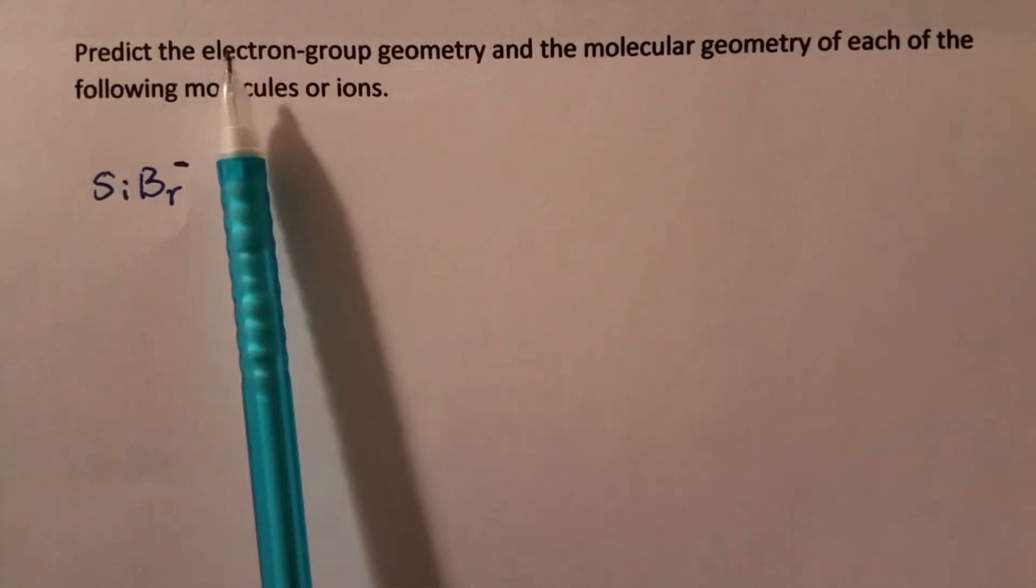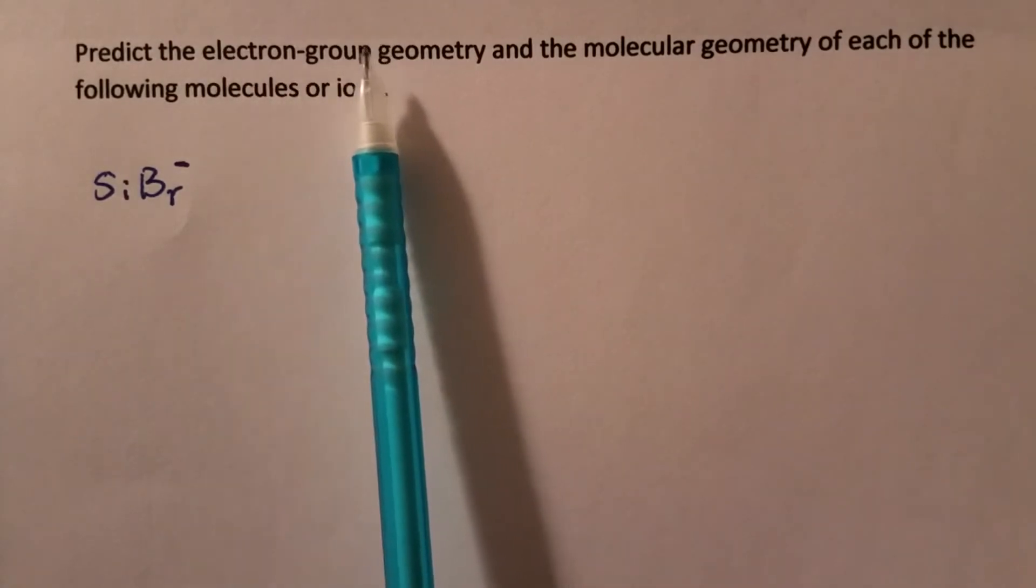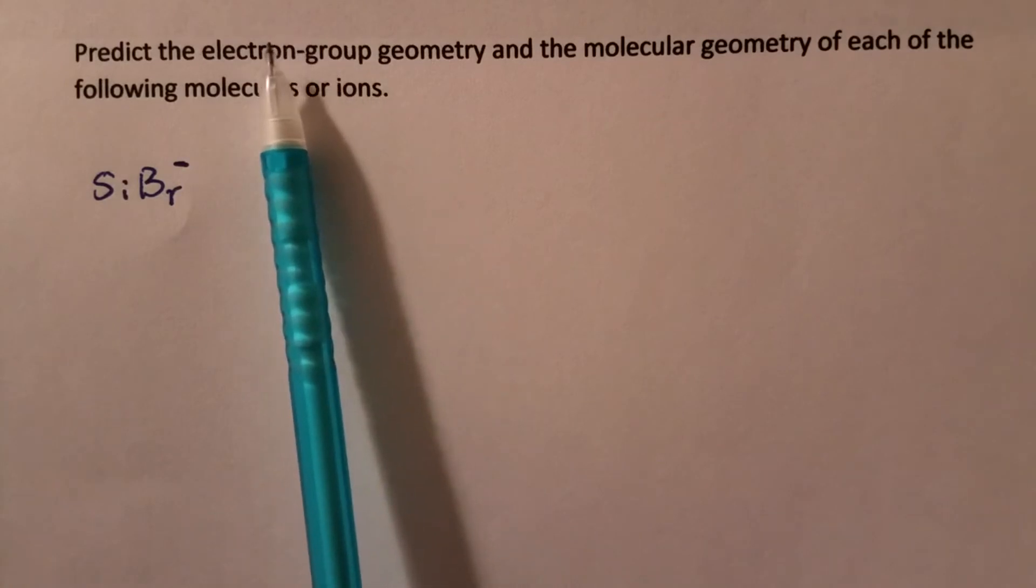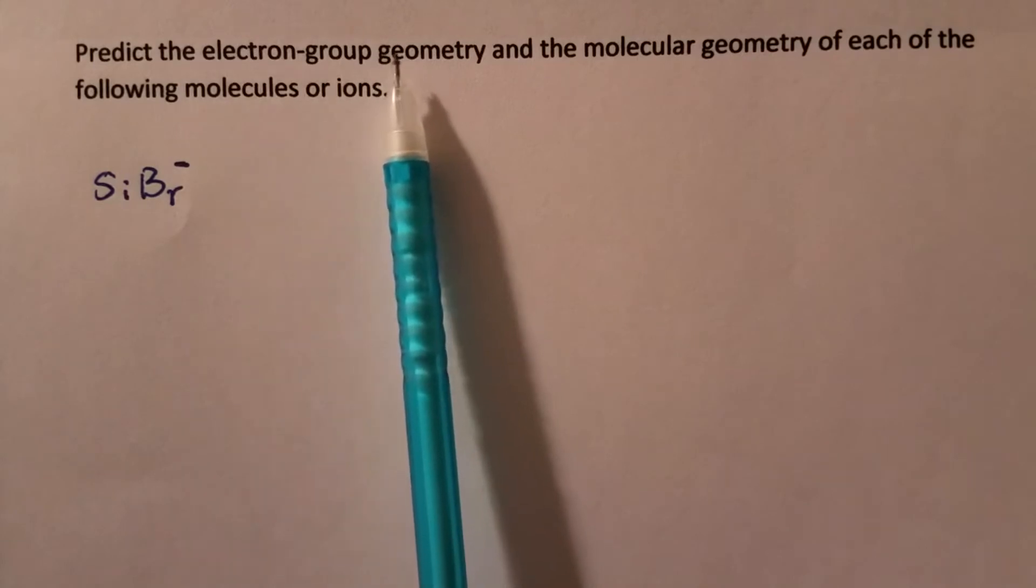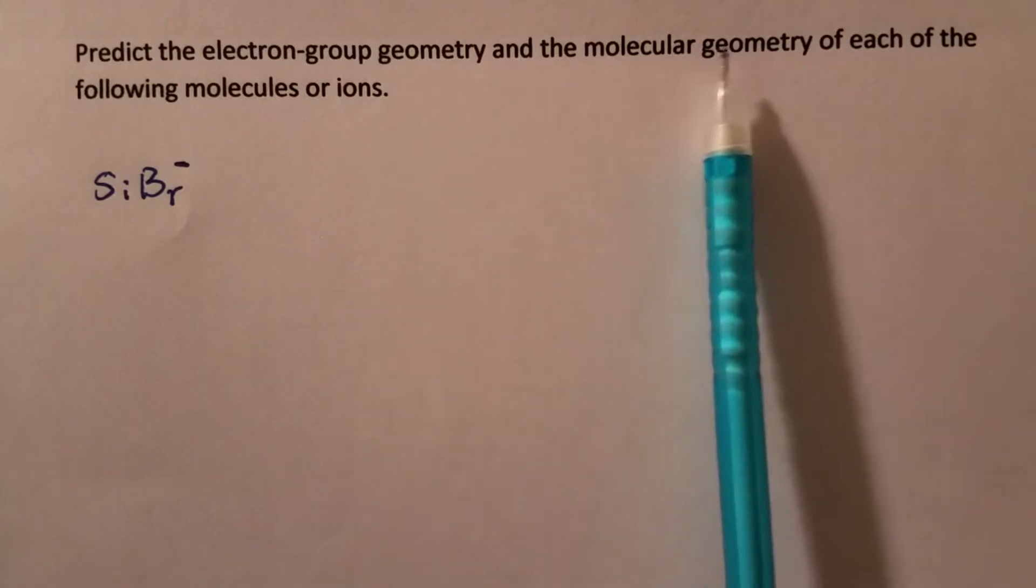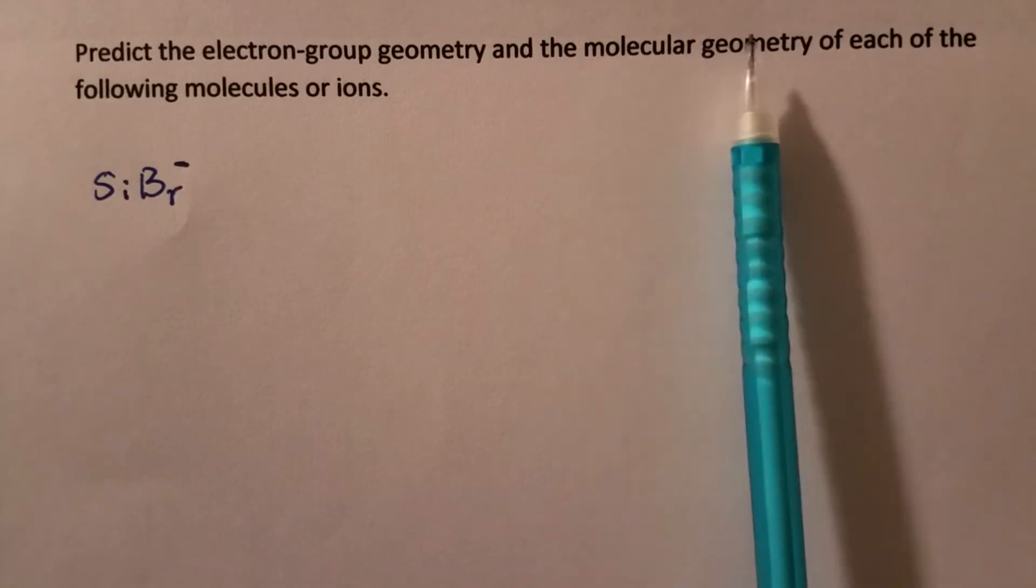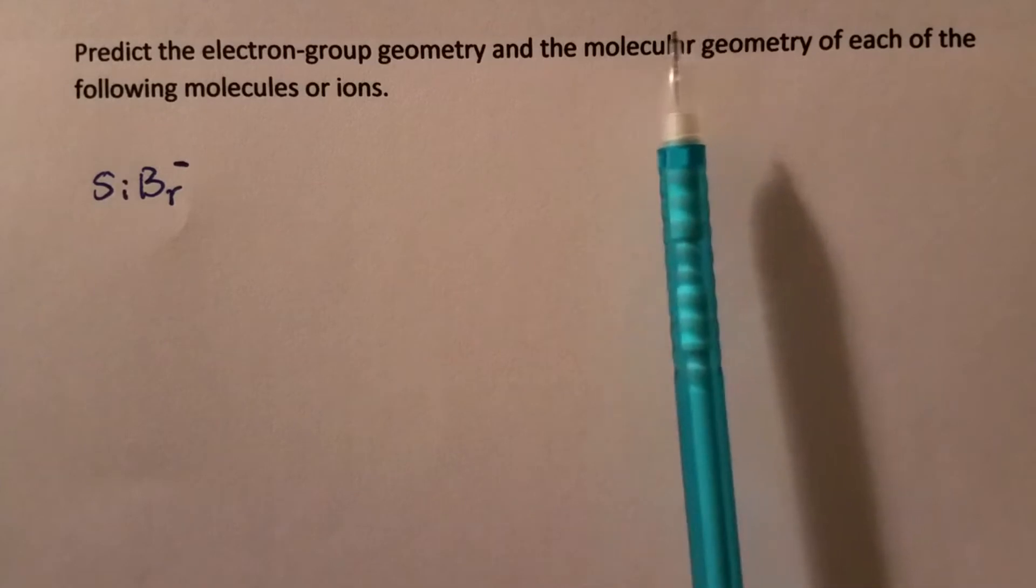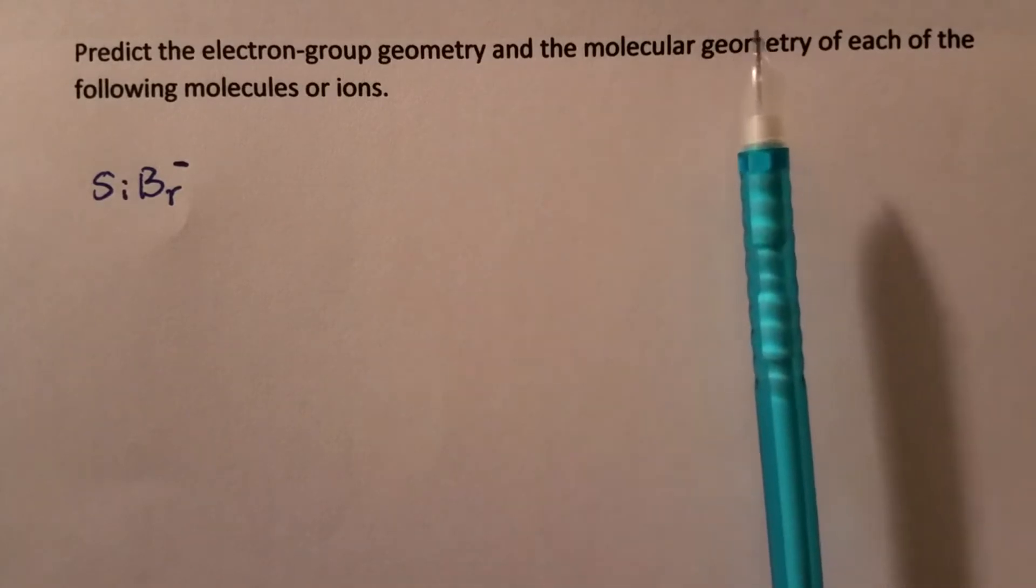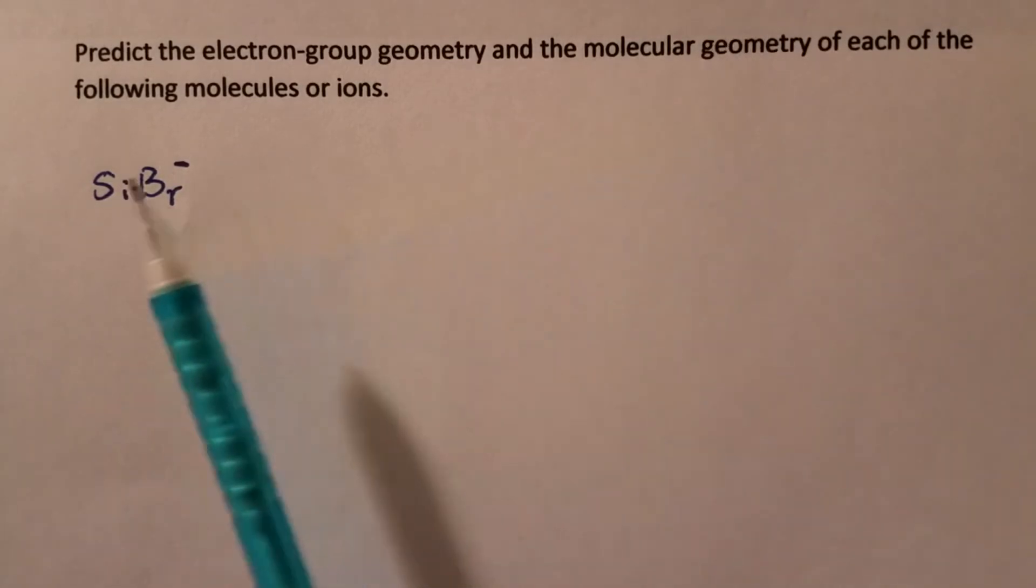It's just focusing on the electrons regardless whether they are bonding electrons or non-bonding electrons. The molecular geometry is just focusing on the bonding electrons or focusing on those atoms. That's why this is about the shape of molecules. Let's take a look at this one.